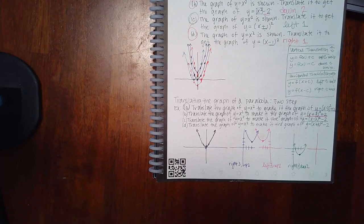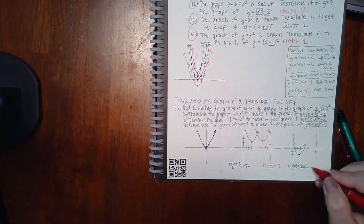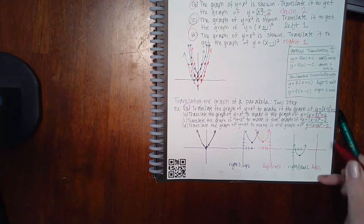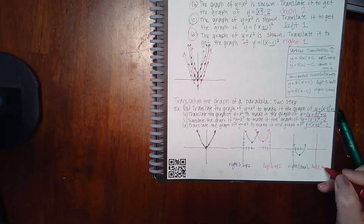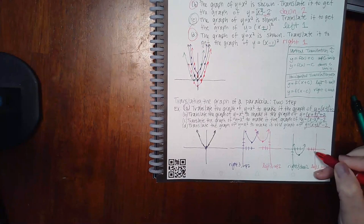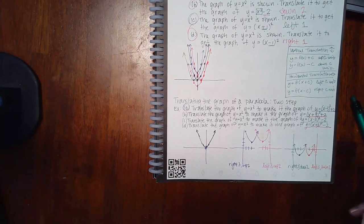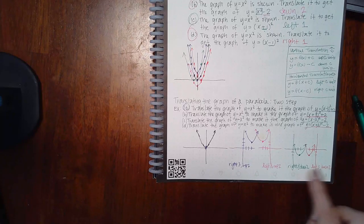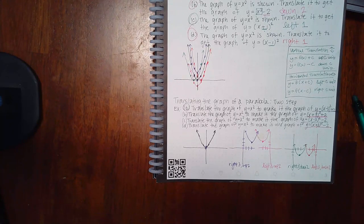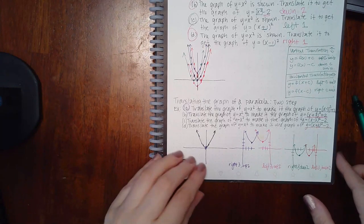For the red graph: plus three on the inside means move left three, and minus two on the outside means go down two. So left and down places the vertex there, and the parabola opens up that way. Remember, you have to do these motions for every single point — all five of those main points need to be translated.